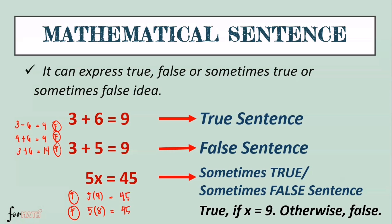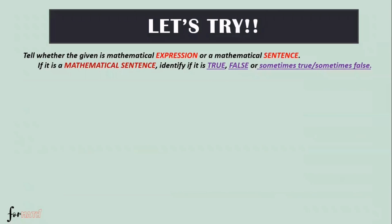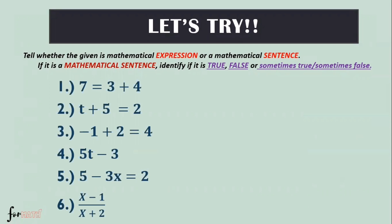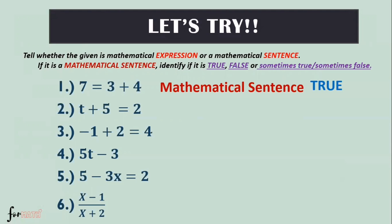Let us try some exercises. Tell whether the given is a mathematical expression or a mathematical sentence. If it is a mathematical sentence, identify whether it is true, false, or sometimes true/sometimes false. Number one: '7 = 3 + 4.' This is a mathematical sentence, and it is true because three plus four really equals seven.